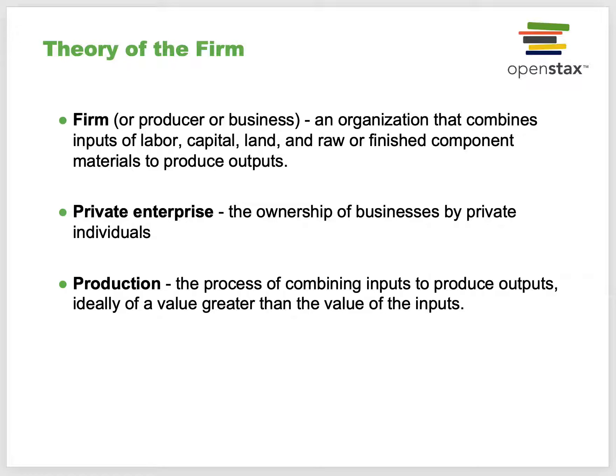Here's the theory of the firm. A firm, producer, or business is an organization that combines the input of labor, capital, land, raw or finished component materials to produce outputs—goods or services. Private enterprise is the ownership of the business by private individuals. Production is a process of combining inputs to produce outputs, ideally of a greater value than the value of the inputs.